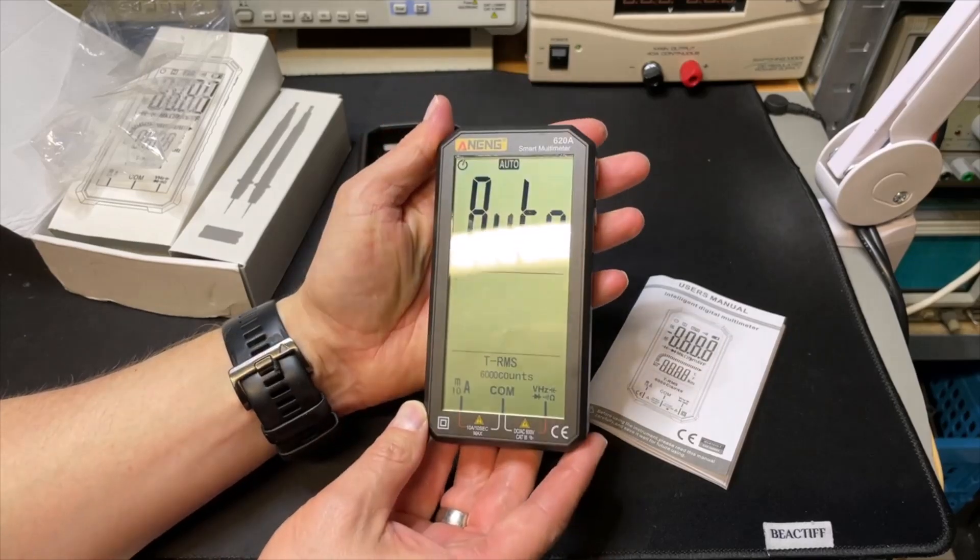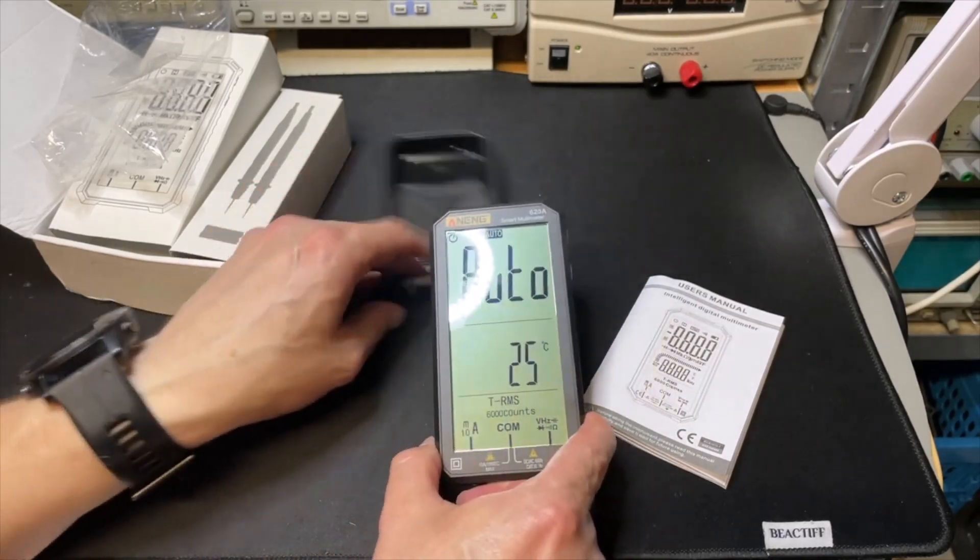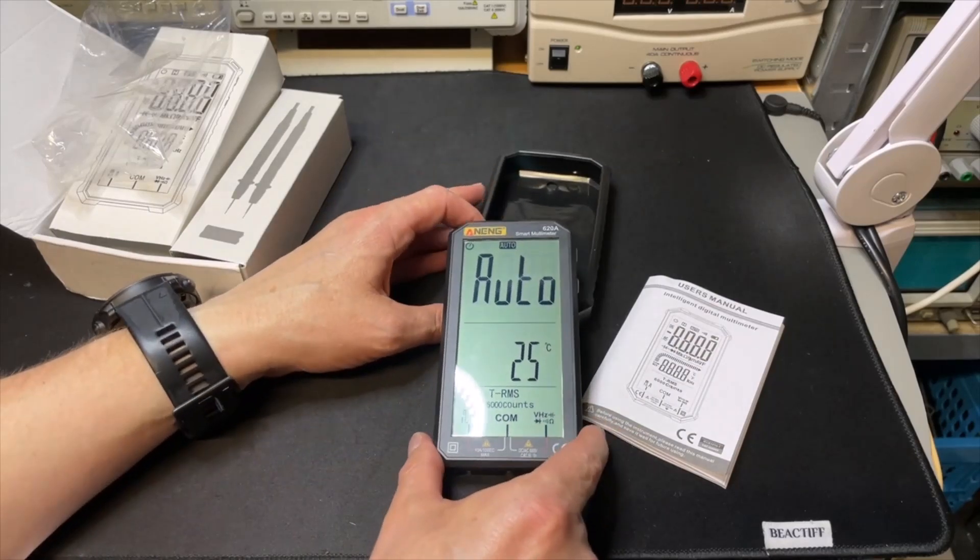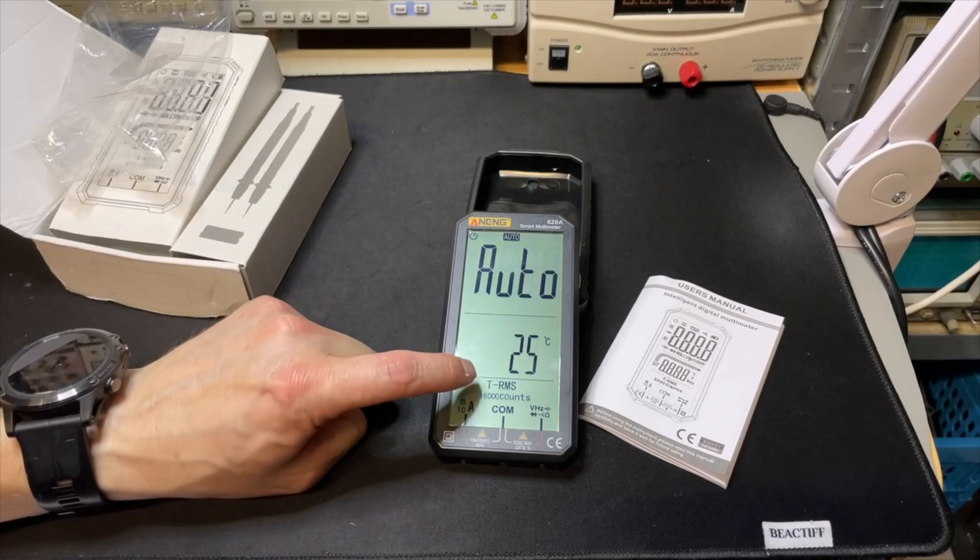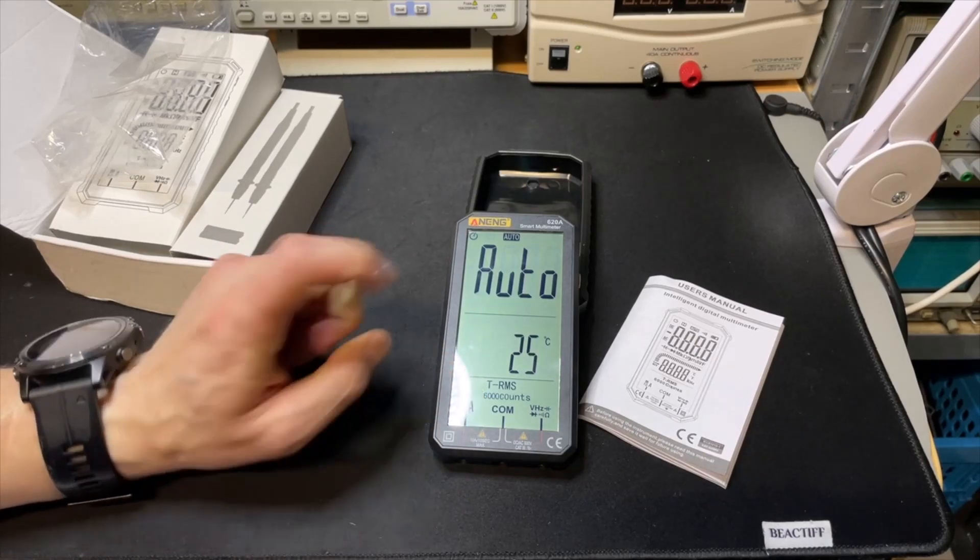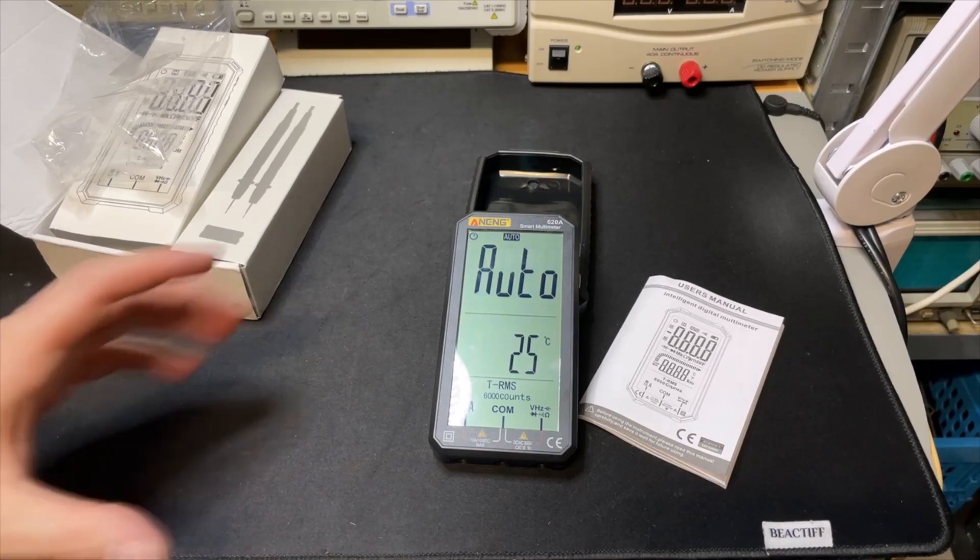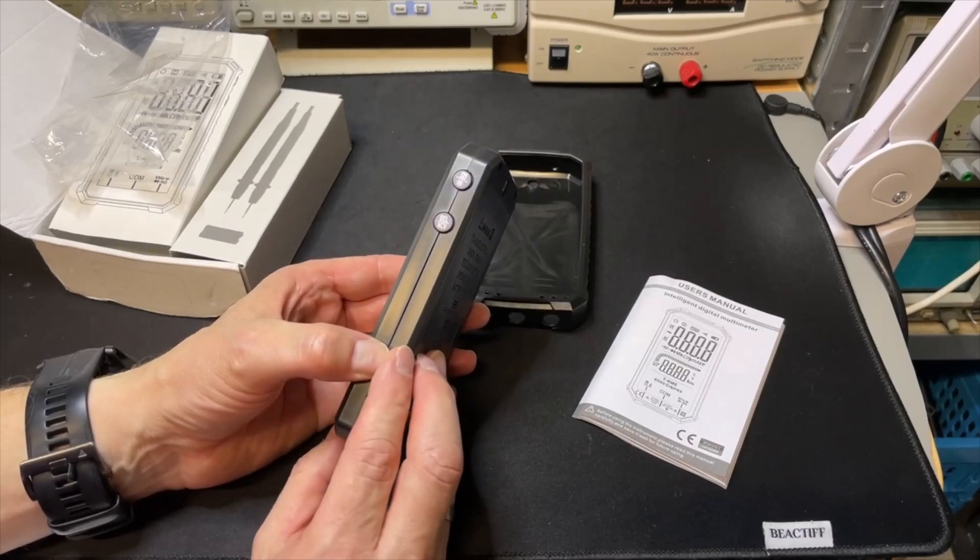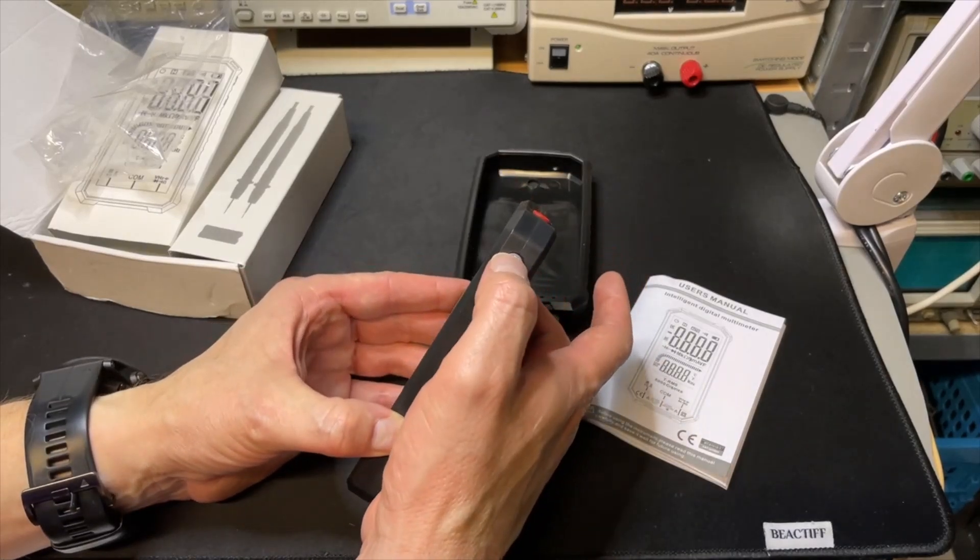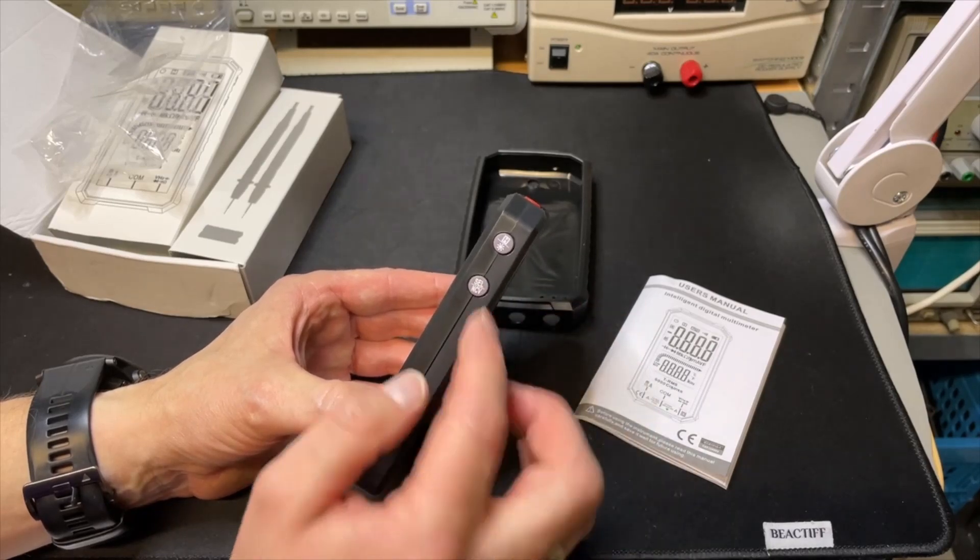Let's switch it on. It's super clear. I need to position it in a way that's clear for you. By default it is in auto mode, true RMS 6000 counts, 25 degrees, and it is indeed kind of hot.